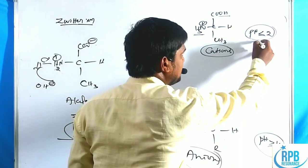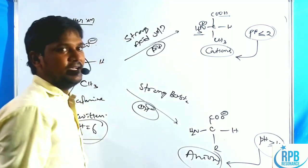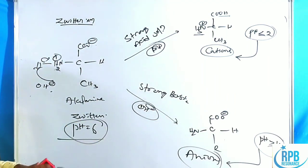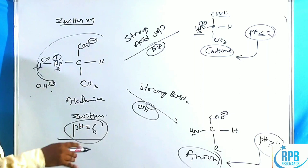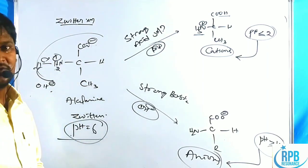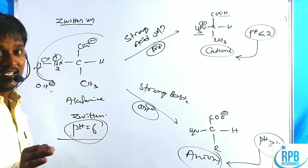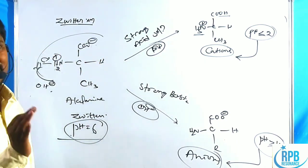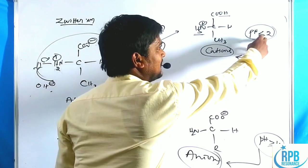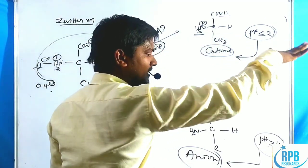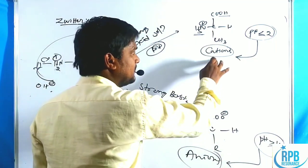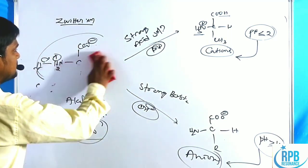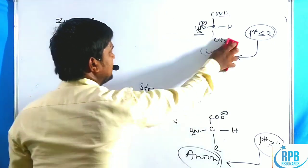At low pH the amino acid is a cation; at high pH it is an anion. The zwitterion gives three types of ions. At approximately pH 6 (neutral), it forms the zwitterion with NH3+ and COO−. In strong acid (pH ≤ 2) it is a cation; in strong base (pH ≥ 10) it is an anion. All amino acids exist as NH3+/COO− form — not as NH2/COOH.